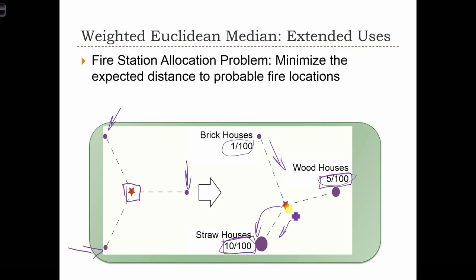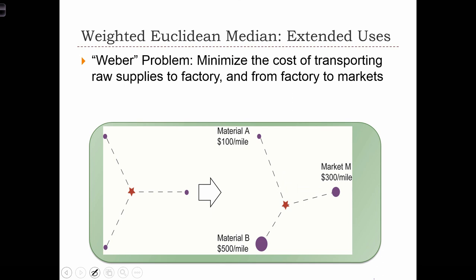Now this is a fairly simple example, but these types of optimization routines are used routinely — say by the military trying to find the service depot where they can ship goods to troops who are located out in the field. Another example comes from a classic case in economic geography called the Weber problem.